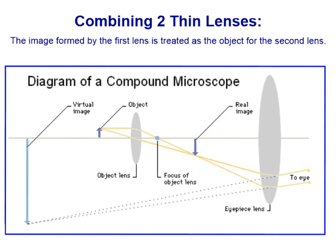We wanted to magnify the image, so we have a second lens — the eyepiece lens. It treats that real image as though it were now the object. This real image for the eyepiece lens is going to be within its focal length, and when it is within the focal length it creates an image that is larger, a magnified image, and it will be a virtual image.